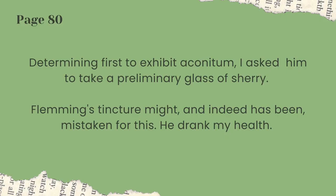The next question is how did this happen. The answer is aconitum — I'm not sure if I'm saying that right — but it's a type of flower. It has medicinal qualities in very small dosages, but in bigger dosages it's poisonous, and the same applies to this flower. The text reads: 'Determined first to exhibit aconitum, I asked him to take a preliminary glass of sherry. Fleming's tincture might and indeed has been mistaken for this. He drank to my health.' You might think 'exhibit' just means showing it, which is a fair assumption — I thought so too.